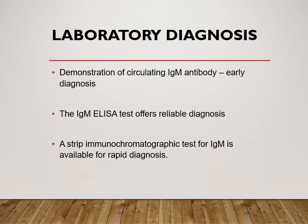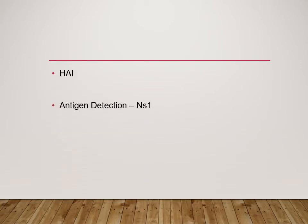For IgM and IgG detection, rapid immunochromatographic card tests are available but must also be confirmed by ELISA. To summarize: days 1–5, use NS1 antigen detection — either rapid card confirmed by ELISA, or directly by ELISA. After day 5, go for IgM antibody detection.